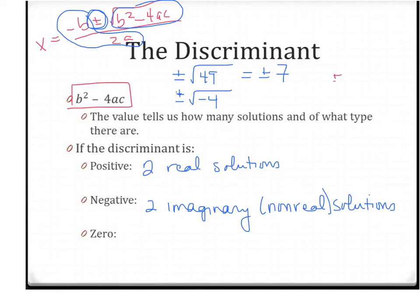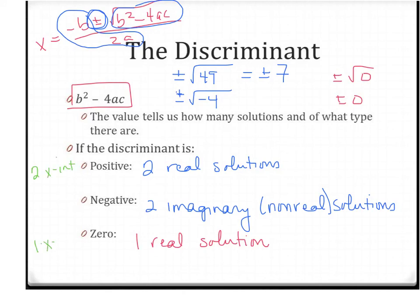What happens if you have zero? You'd have plus or minus the square root of zero. The square root of zero is just zero, and there's no difference between adding zero and subtracting zero, so you're going to have one real solution. What this equates to in graphing: a positive discriminant means two x-intercepts, zero means one x-intercept — that was the vertex on the x-axis — and a negative discriminant means zero x-intercepts. So it all really relates, and you can figure out how many solutions you're going to have just by looking at the discriminant.